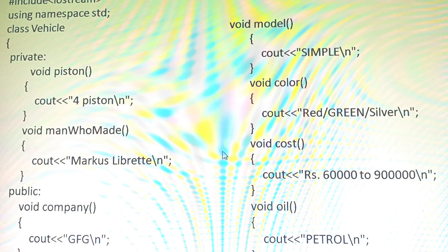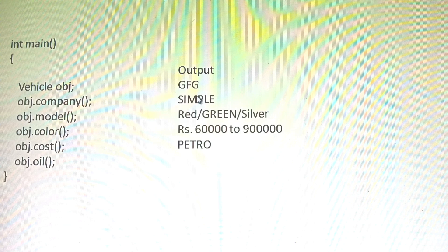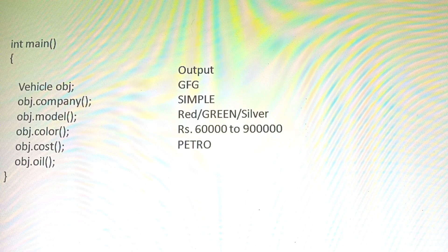These are the class declarations where we have defined the members and functions. In the main program, we create object obj and call it with company name, model, color, cost, and oil - which outputs GFG, simple, green, petrol. The private functions Piston and ManWhoMade cannot be called outside the class because they are private - that is hidden. Only inside the class can we call them. Outside the class we cannot call them. The public functions using public access specifier can be called outside the class. This is abstraction.